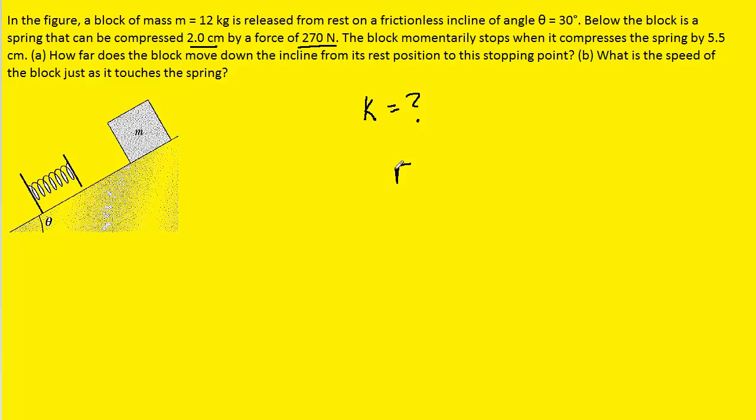We were told that the spring will be compressed by 2 centimeters by a force of 270 newtons. Now we know from Hooke's law that the force exerted on the spring is related to the distance by which the spring compresses, delta x, by this equation right here. We can divide this equation by delta x and solve it for the spring constant k. And then we can plug in 270 newtons for the force, and for the displacement of the spring, we want to use 0.02 meters. We just have to move that decimal place over two places to the left. And then we can pick up our calculators and determine the spring constant.